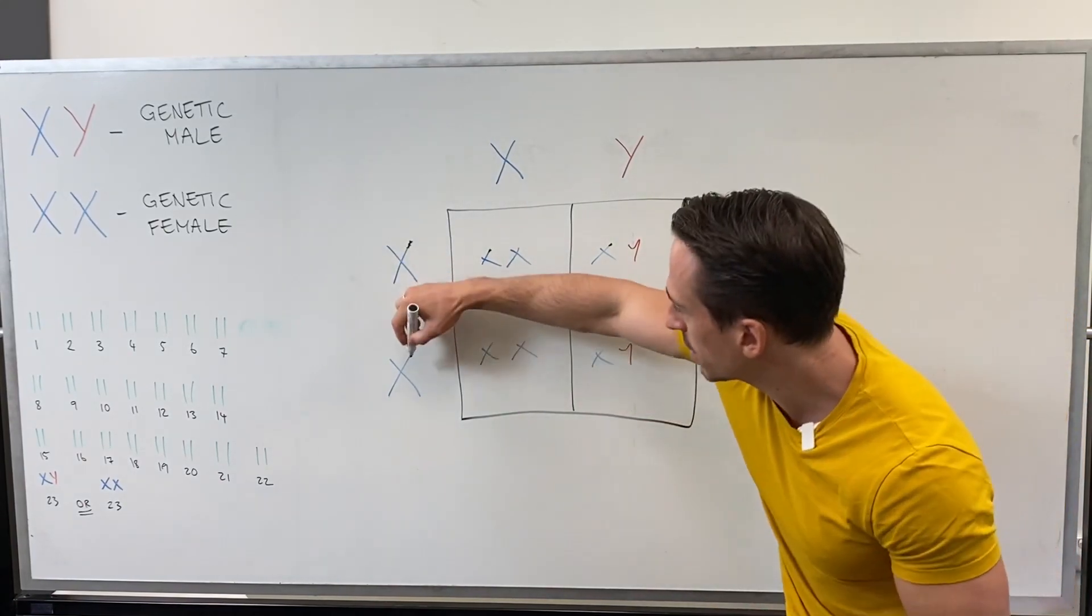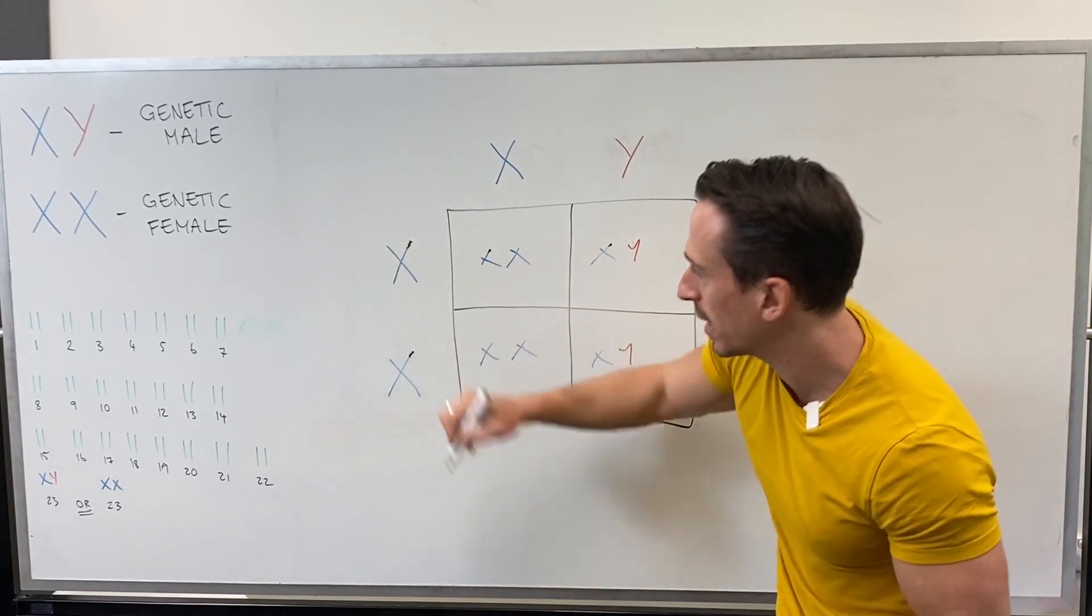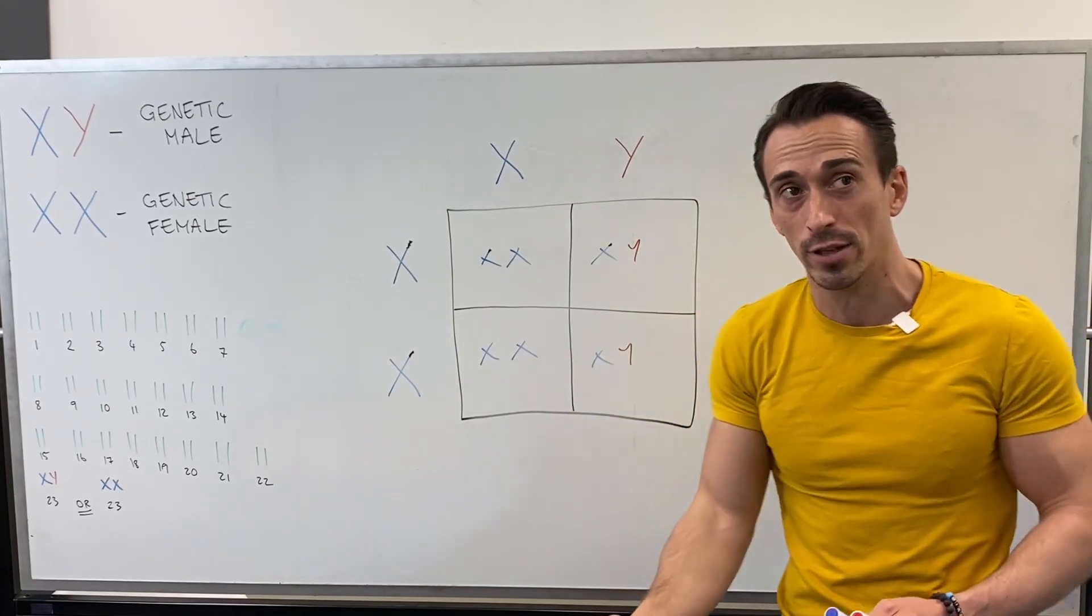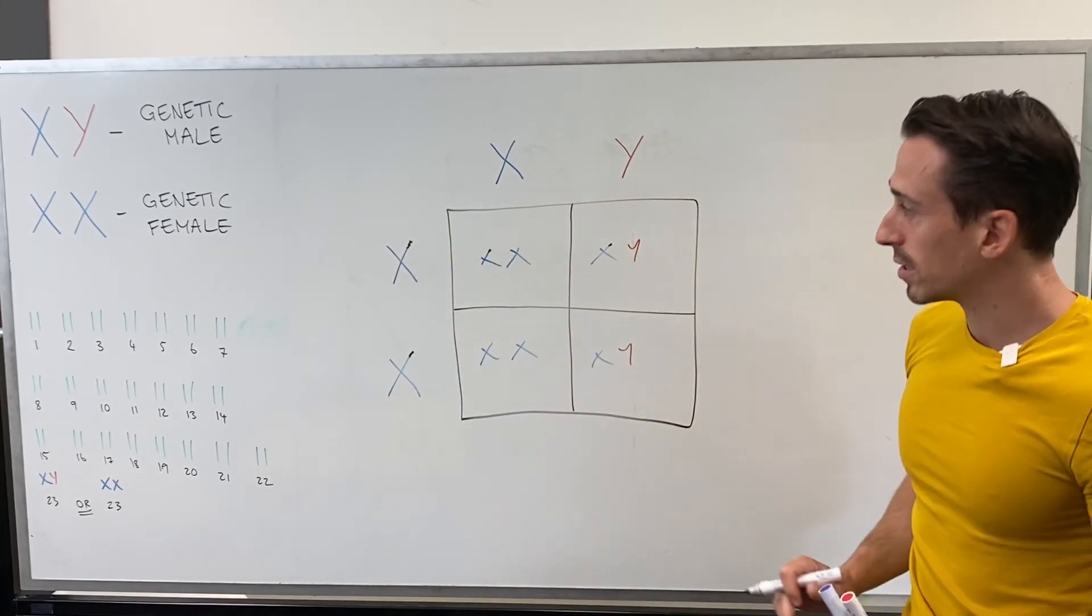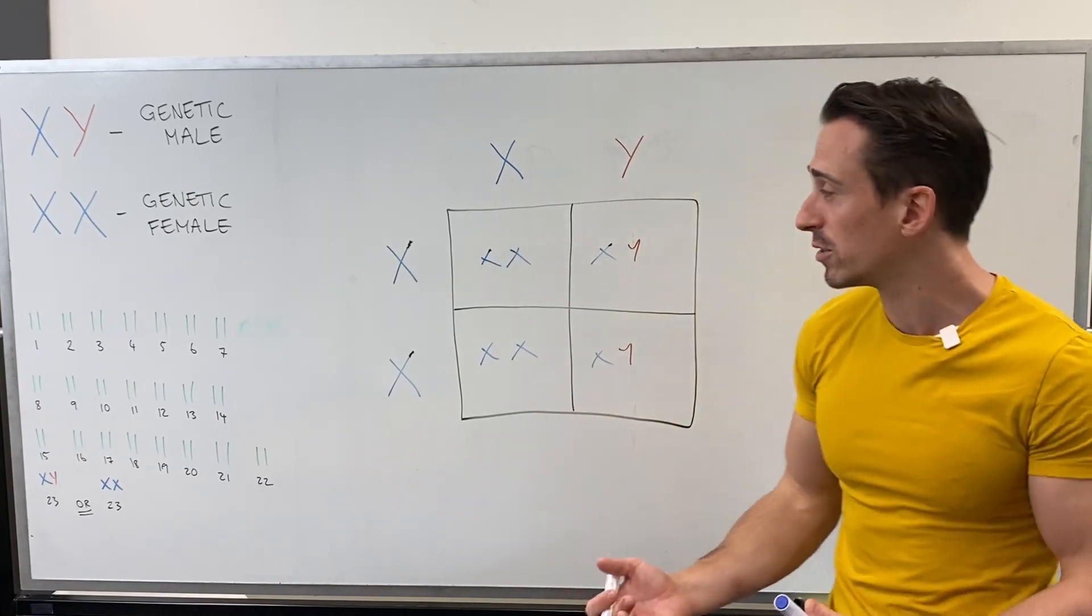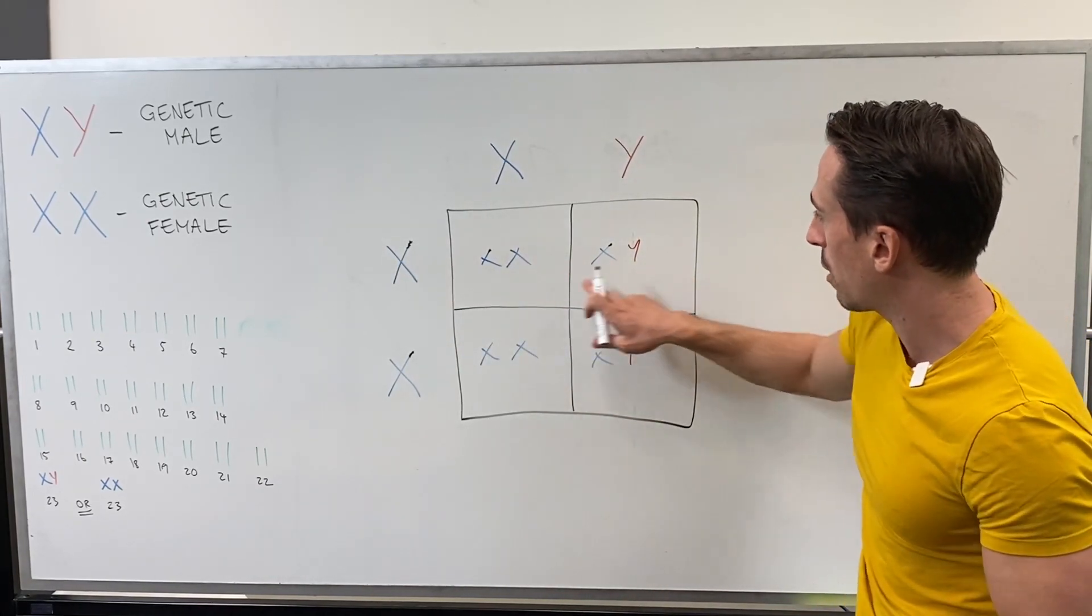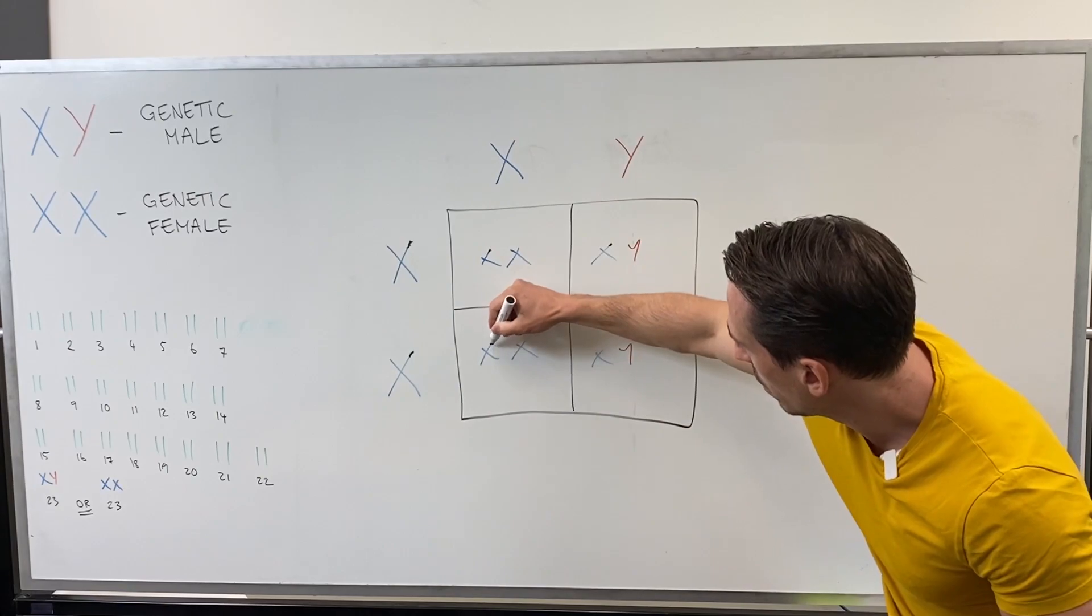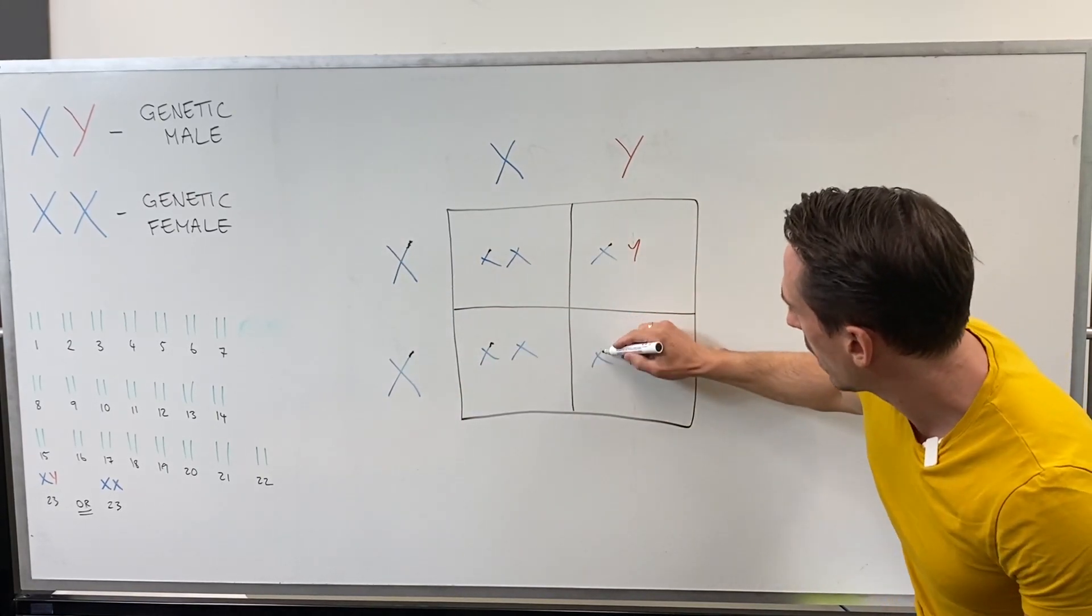So what if mum, let's just say mum, did have haemophilia? Because it's recessively inherited, she needs both copies and she does. What's the likelihood of the offspring having the disease or disorder? Well, we've got that one done. Here we go. And here we go.